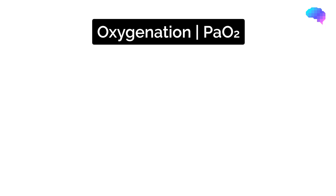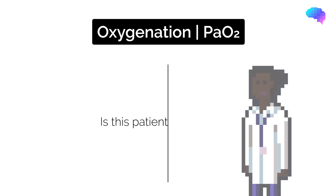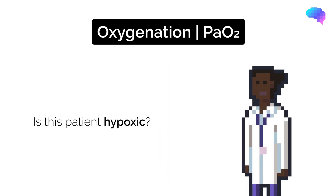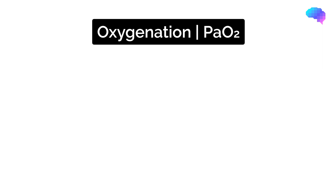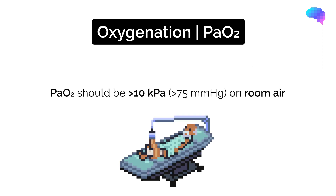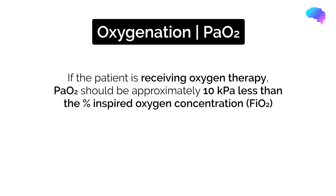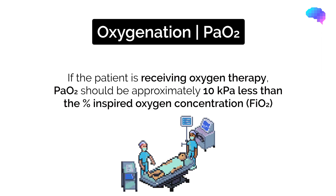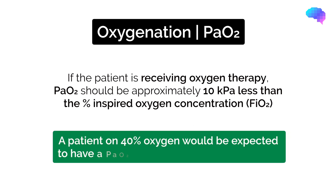Your first question when looking at the ABG should be: is this patient hypoxic, as hypoxia is the most immediate threat to life. PaO2 should be over 10 kilopascals when oxygenating on room air in a healthy patient. If the patient is receiving oxygen therapy, their PaO2 should be approximately 10 kilopascals less than the percent-inspired concentration FiO2, or fraction of inspired oxygen. So a patient on 40% oxygen would be expected to have a PaO2 of approximately 30 kilopascals.